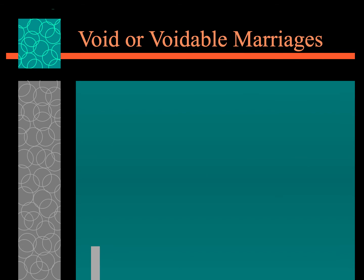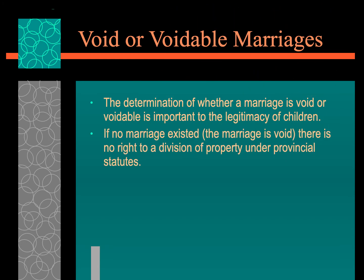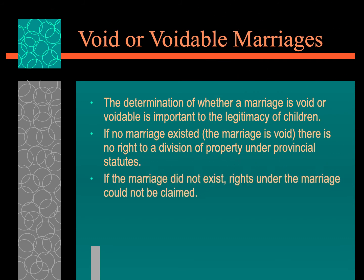The determination of whether a marriage is void or voidable is important when it comes to the legitimacy of the children. When you look at family law, it often comes down to what is in the best interest of the kids. If no marriage existed — meaning it was void — there is no right to a division of property under the provincial statute, as the rights of the marriage could not be claimed.